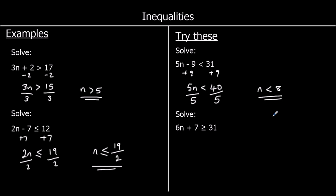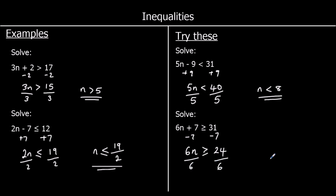The second one: 6n + 7 ≥ 31. I'll get rid of the plus 7 by subtracting 7 from both sides, giving 6n ≥ 24. Then dividing both sides by 6 gives n ≥ 4.